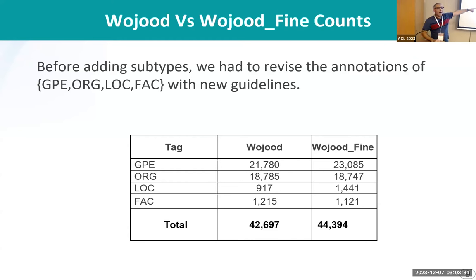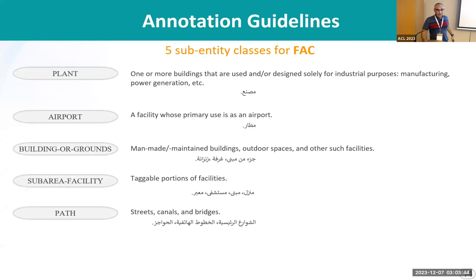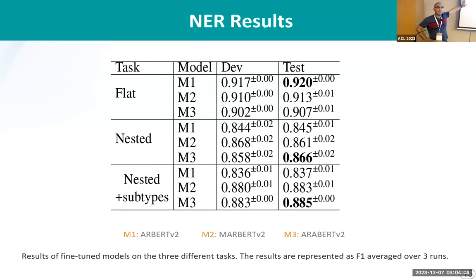These are statistics about the number of entities we revised before annotating with subtypes. These are the guidelines for the subtypes — you can look at the paper. Then we trained a model; we trained actually three. We used different pre-trained models. First we trained on flat without subtypes, then we trained with nested without subtypes, then we trained nested with subtypes. And as you see here, it's 88.5% F1 score.